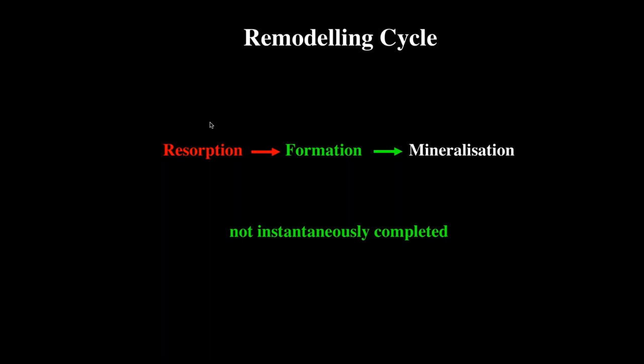I want now to turn my attention to bone remodeling, because I believe it is not well understood. Without understanding it, we cannot understand how the drugs we use work properly. We know that the remodeling cycle involves initially resorption of bone, followed by filling in of the resorption cavity with bone formation — the deposition of osteoid, which is unmineralized bone. That osteoid undergoes mineralization. However, these three events in the remodeling cycle are not instantaneous. There is a time lapse between them, and that slowness produces what's called a transient, fully reversible deficit in the bone matrix volume and its mineral content.